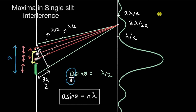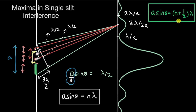We can say that maximas are formed when the path difference equals (n + 1/2)λ. When n = 1, a sin θ = 3λ/2, giving the first maxima. When n = 2, a sin θ = 5λ/2, giving the second maxima. This also explains why the peak intensity decreases as you go further from the center.